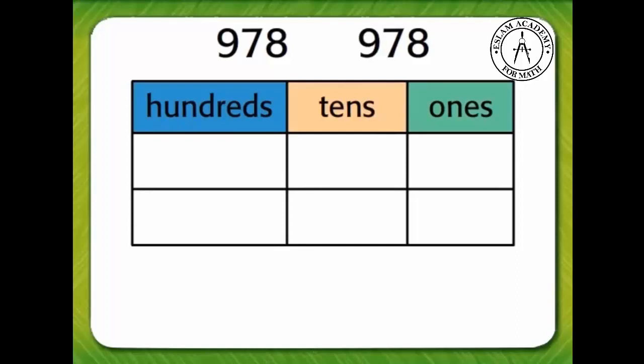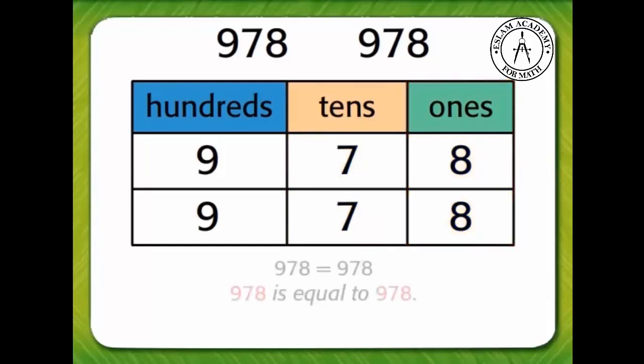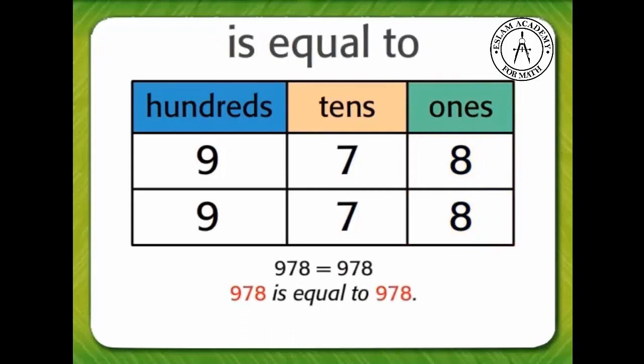Now let's compare 978 and 978. Both numbers have nine hundreds, both numbers have seven tens, both numbers have eight ones. So 978 is equal to 978.